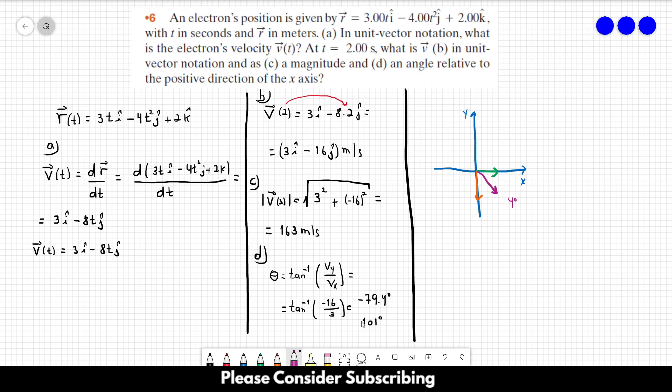So let's analyze both angles. 101 degrees is something like this. So the angle that is at the fourth quadrant is minus 79.4 degrees. So this is the answer of letter D.